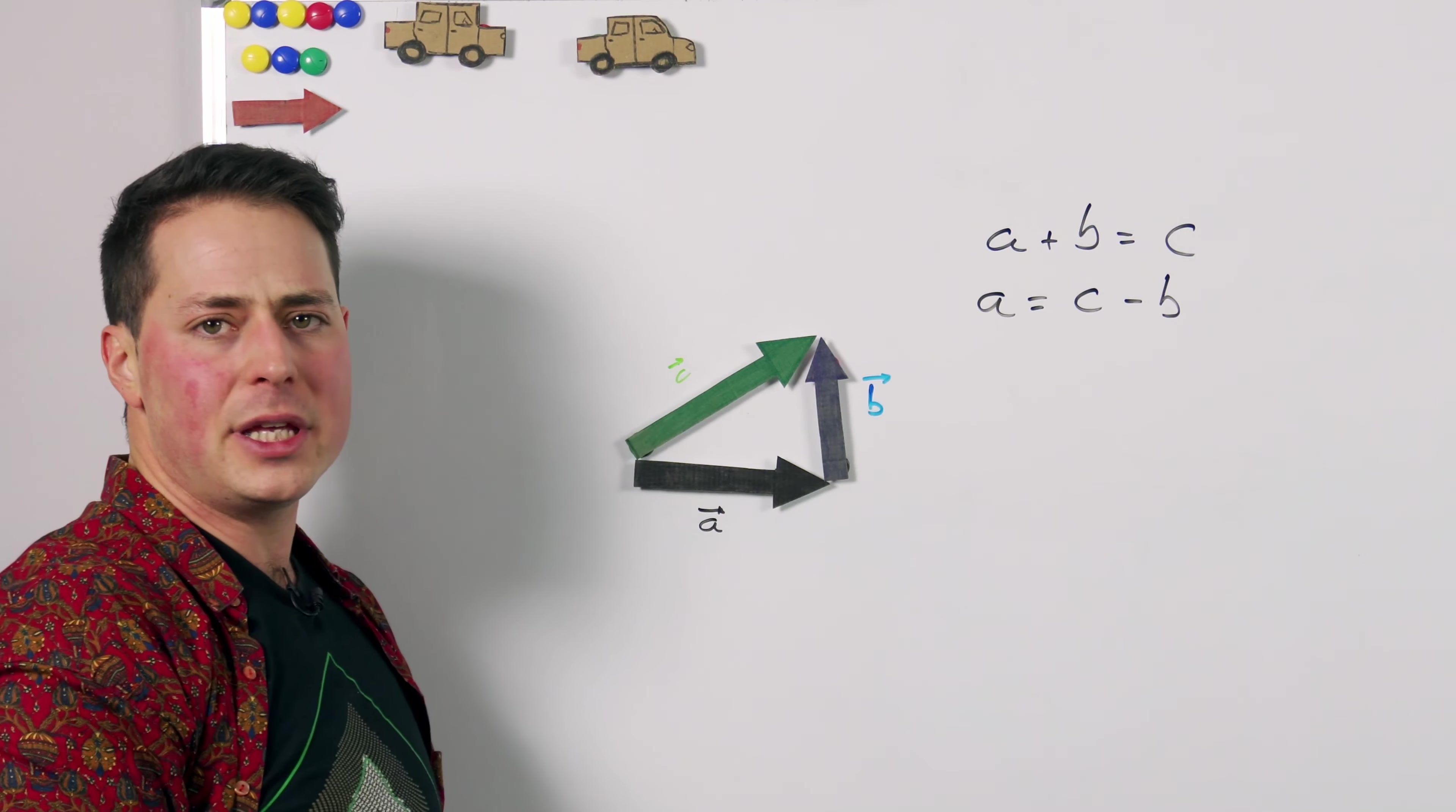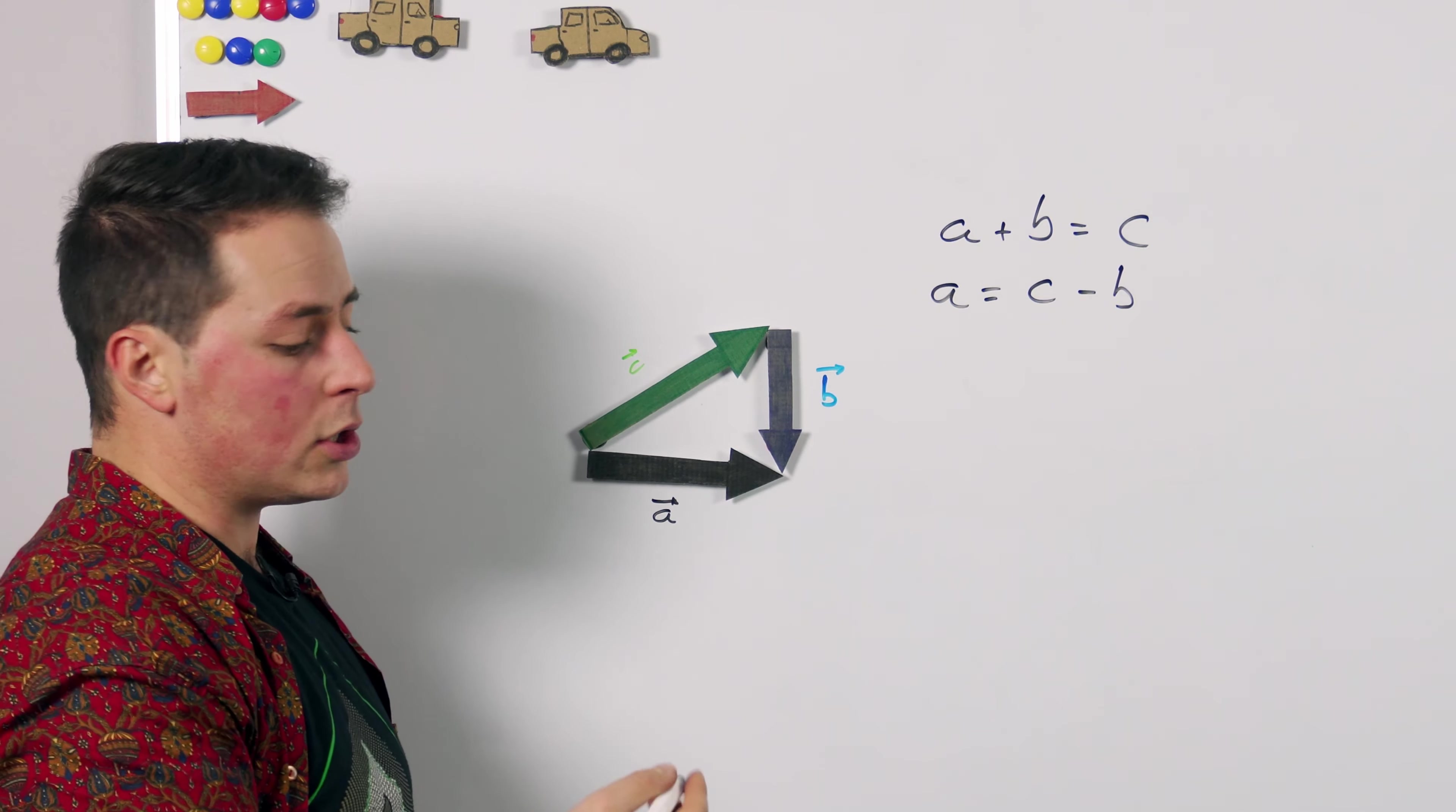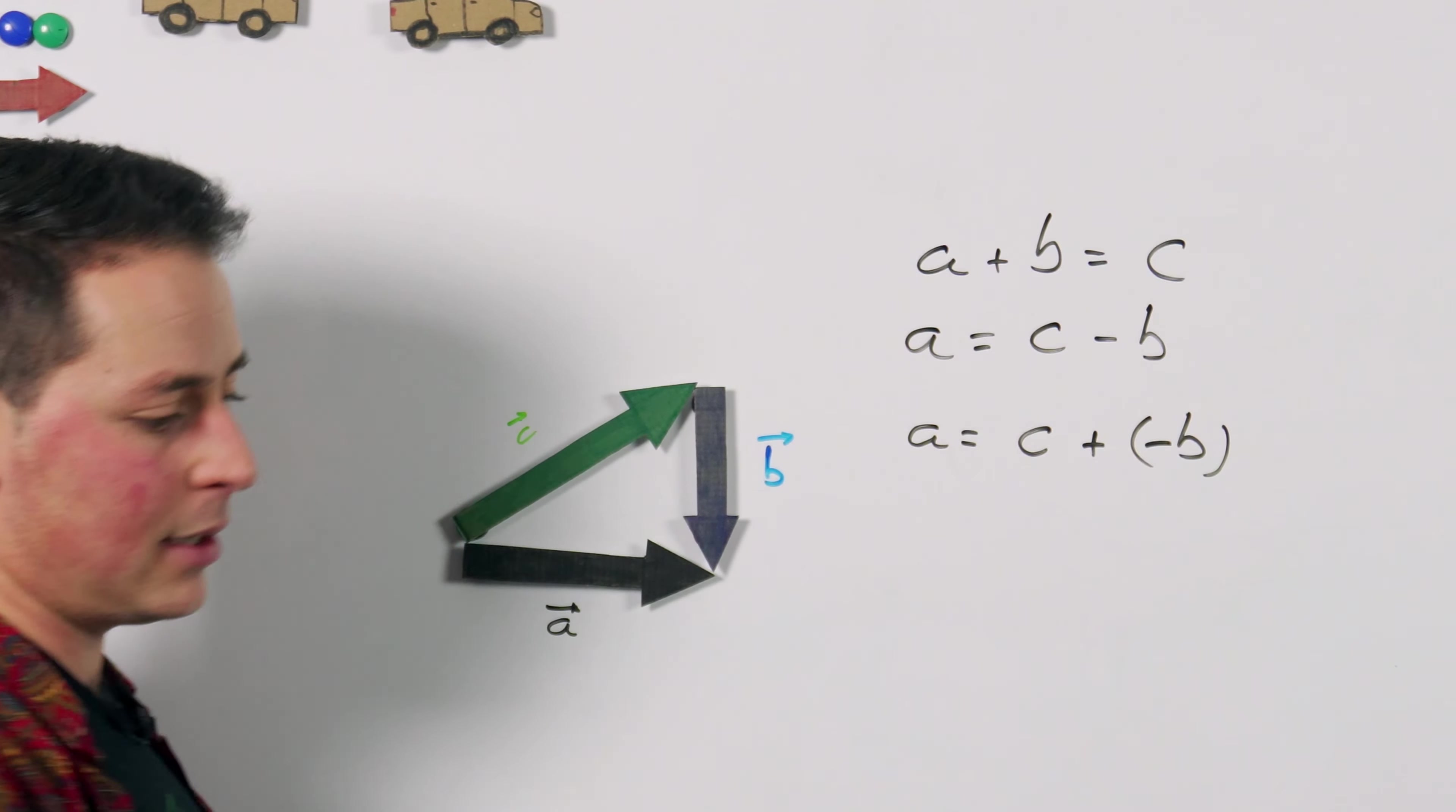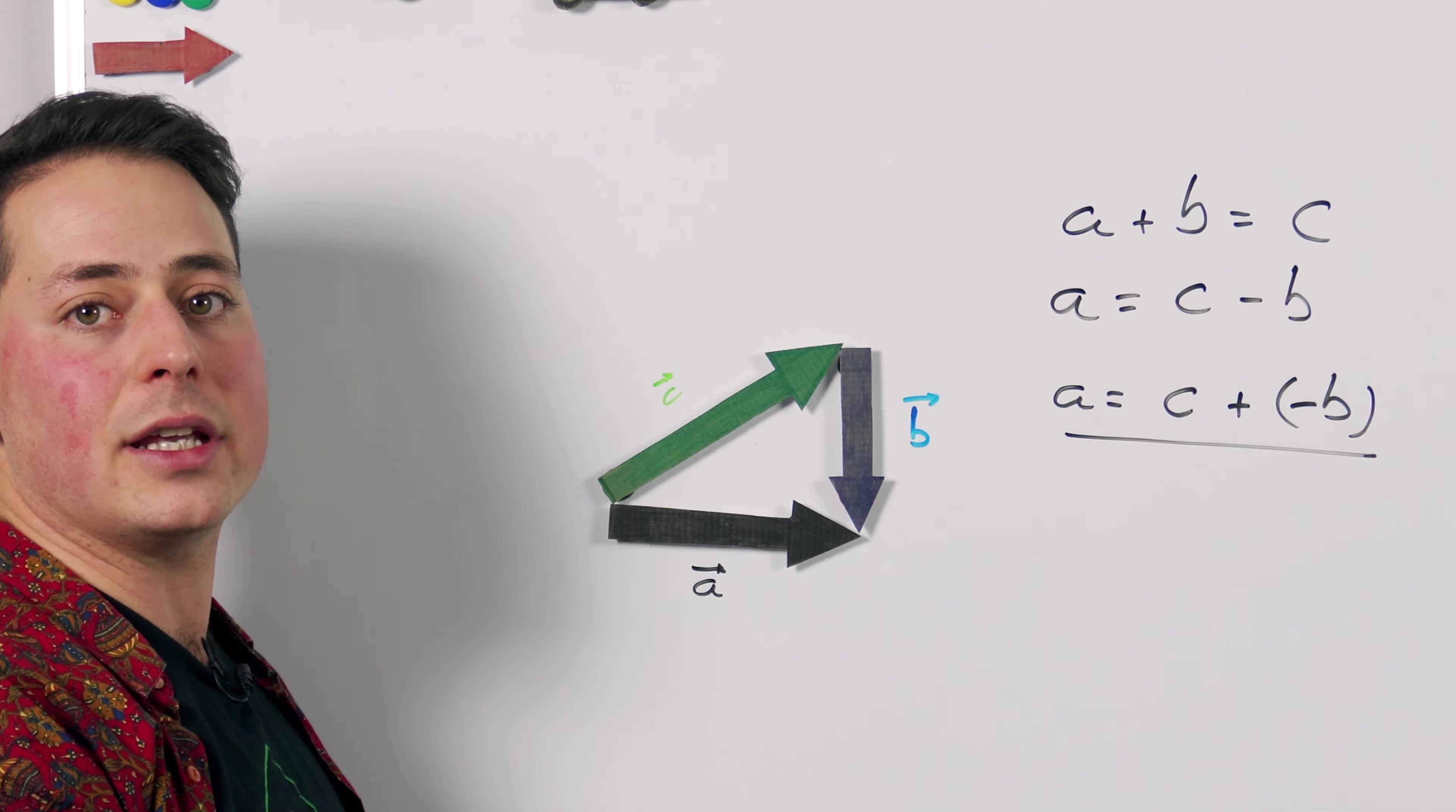Now what does this mean? Well if we look at this we can see that we can get a if we take b, flip it around and add c and b together. So we could say that a equals c plus b flipped and this is the essence of vector subtraction. To subtract b from c all we need to do is flip b around and then add it to c.